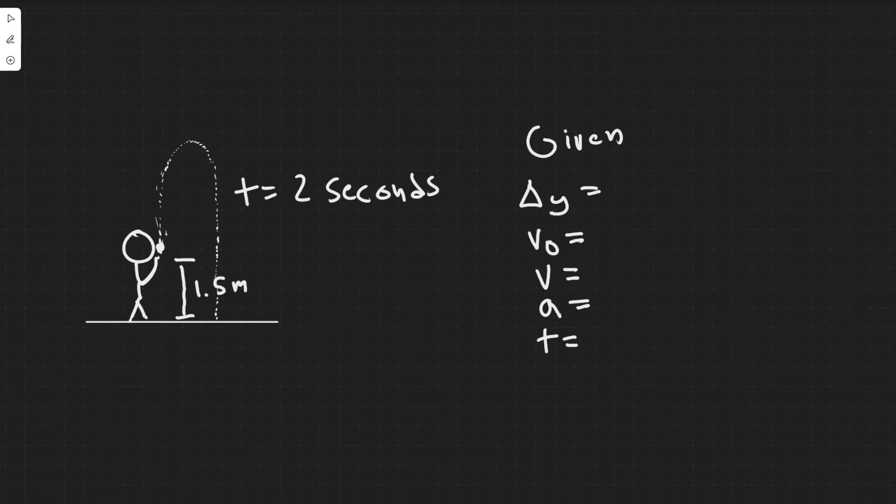So the way these things work is we identify what we're trying to find first. So they want us to find the speed the water leaves the nozzle. So this would be the initial velocity because it's the beginning speed, and that's what we're trying to find. So generally, I like to write v sub zero equals question mark because that's what I'm trying to solve for.